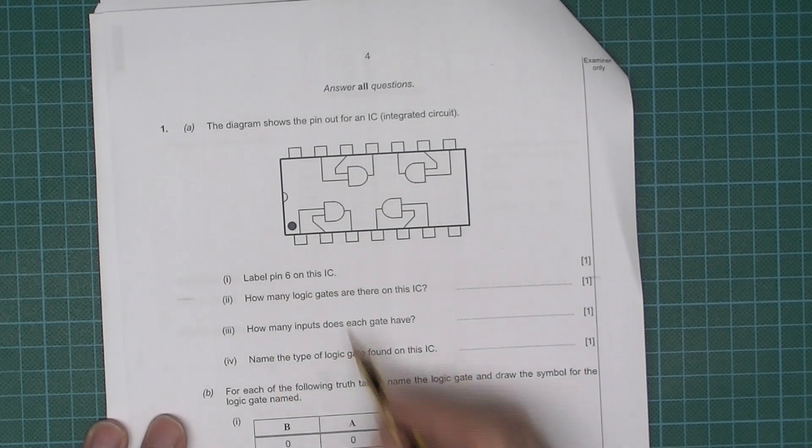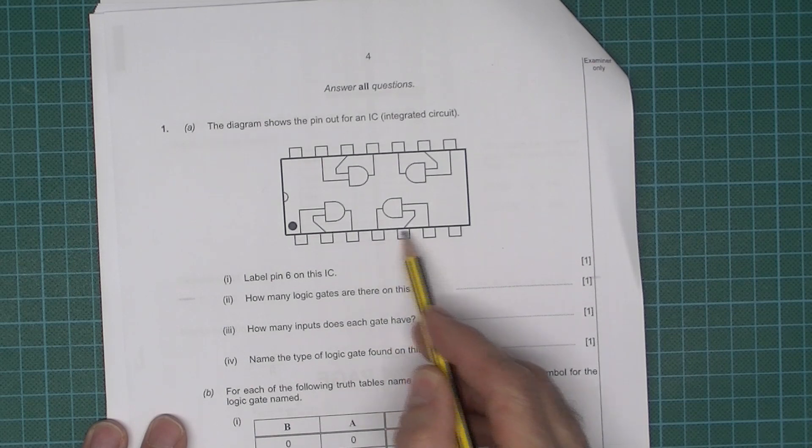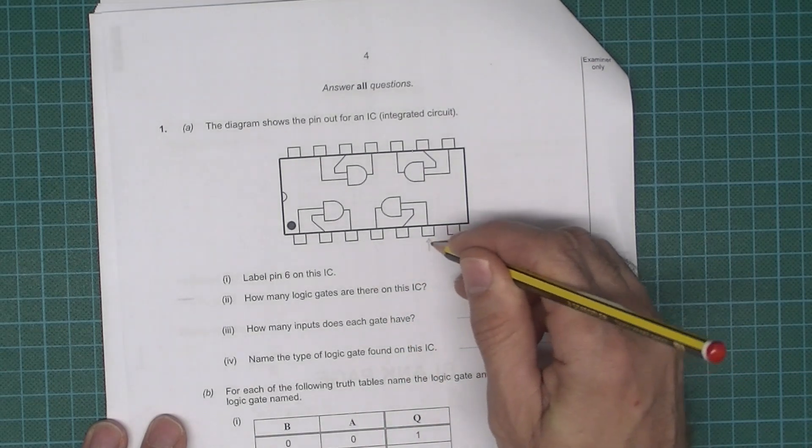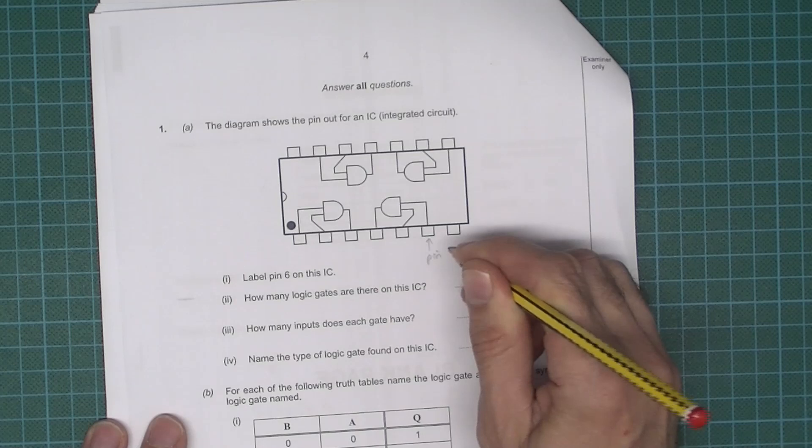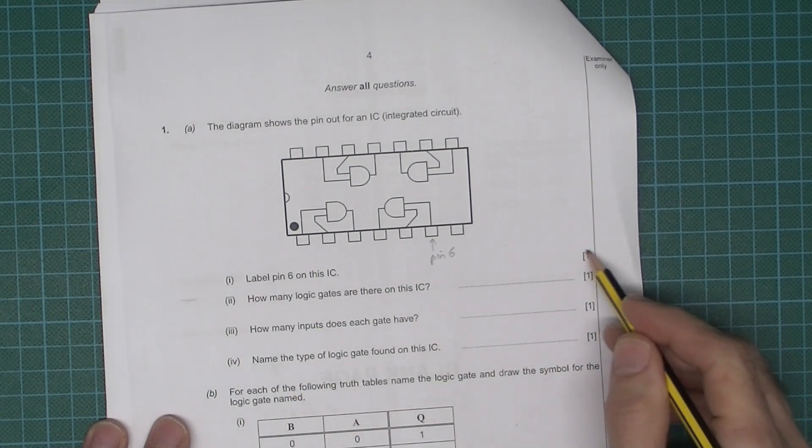Okay, so label pin 6 on this IC. Well we start from here, so 1, 2, 3, 4, 5, 6. It says label it, so pin 6 is what I'm going to write there. Okay, so I'll get one mark for that.